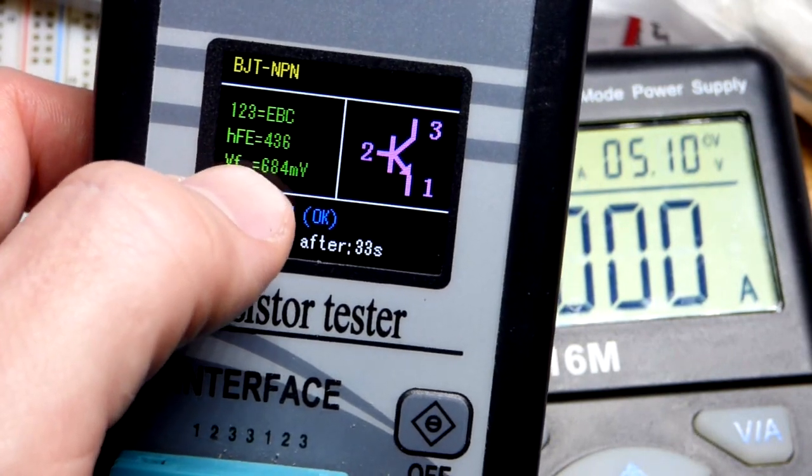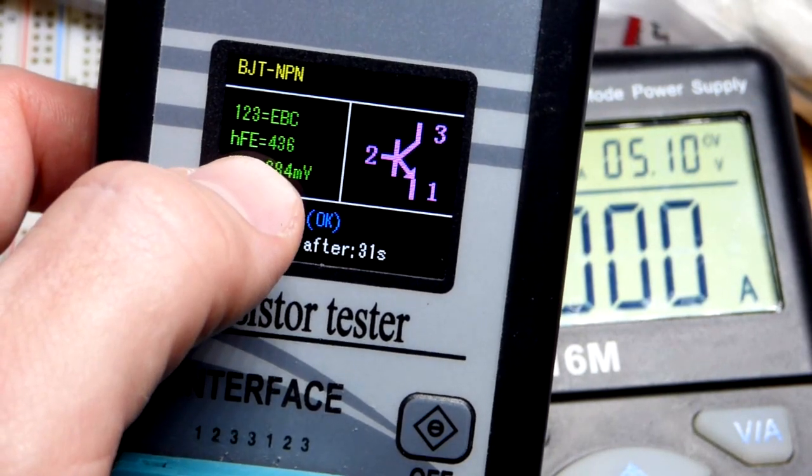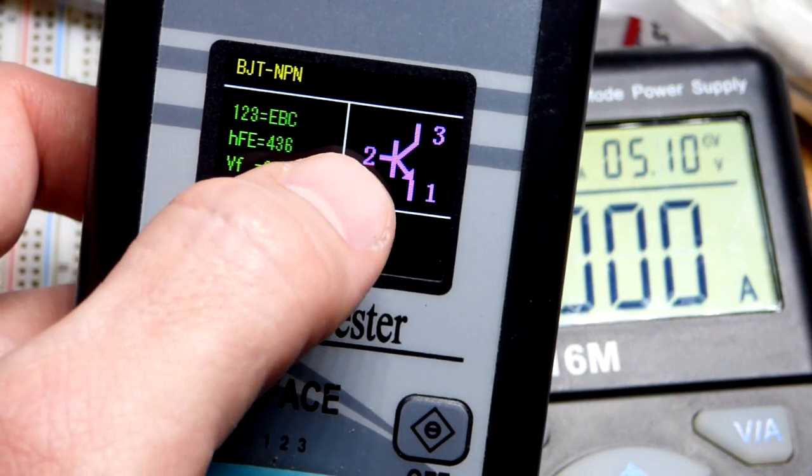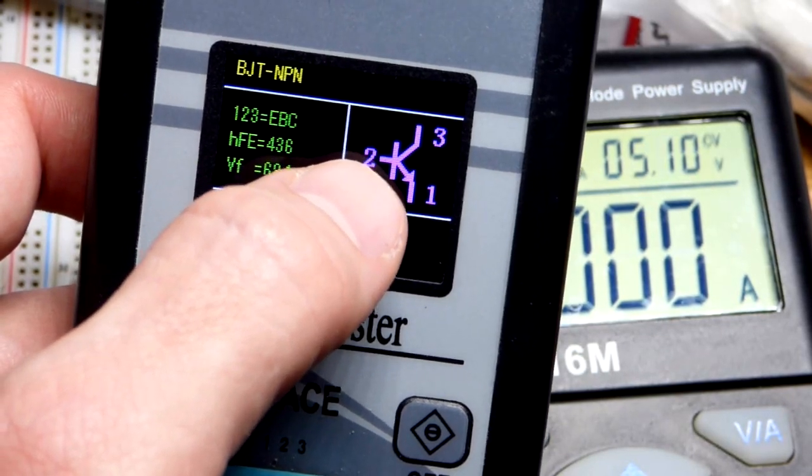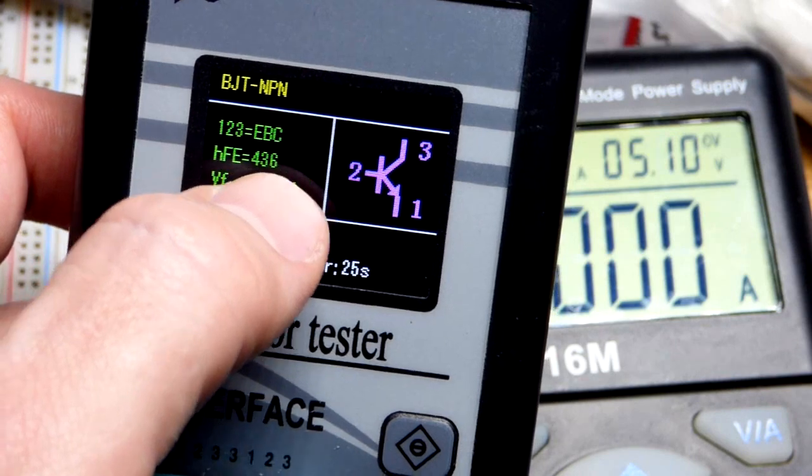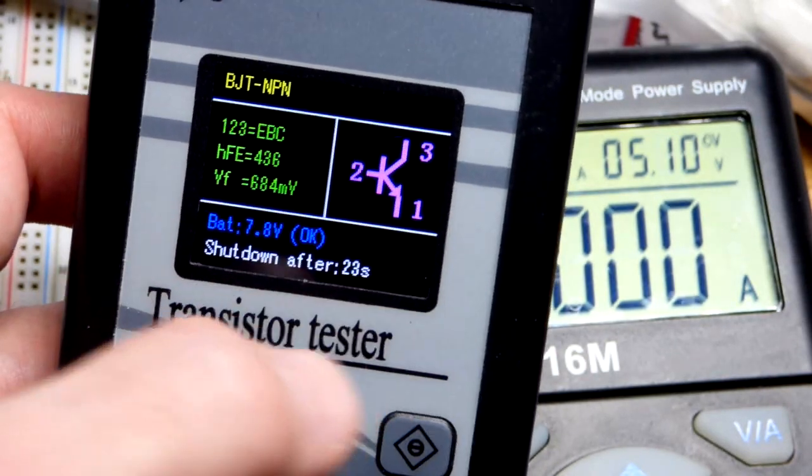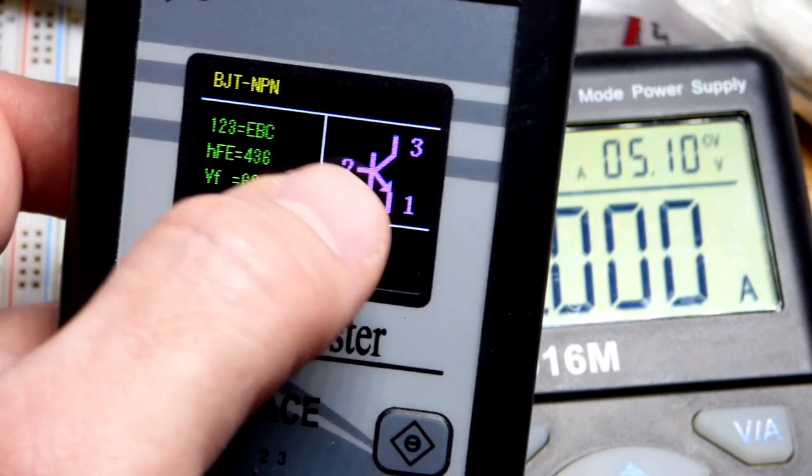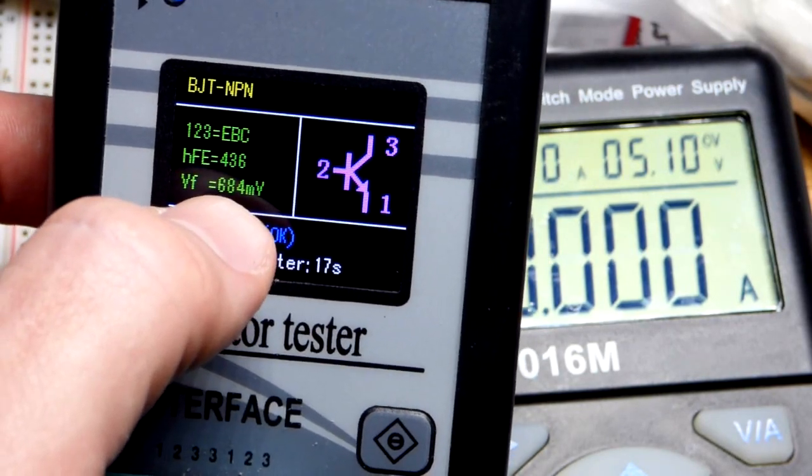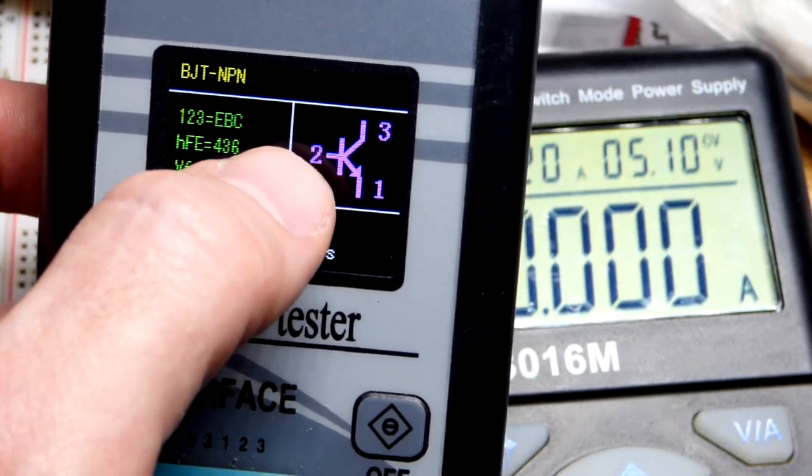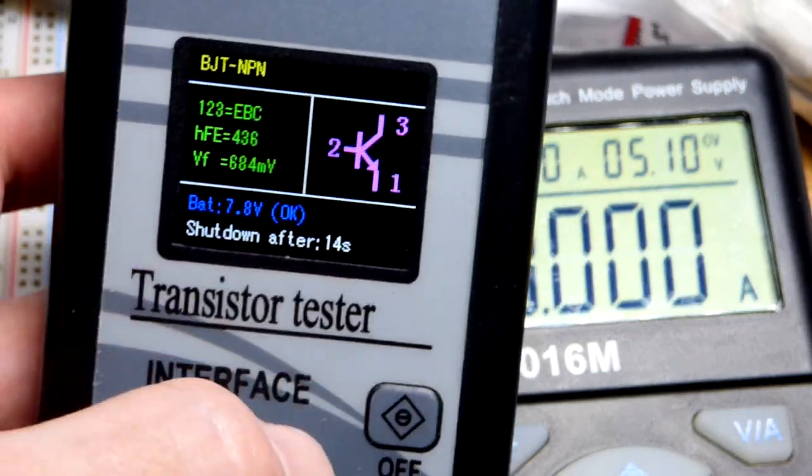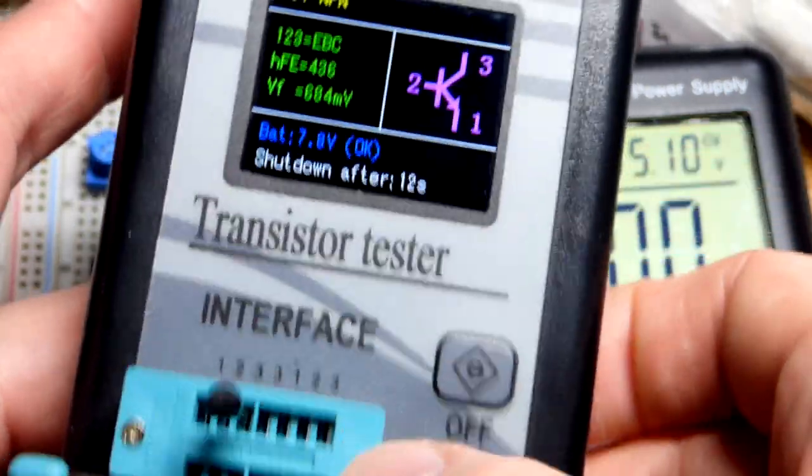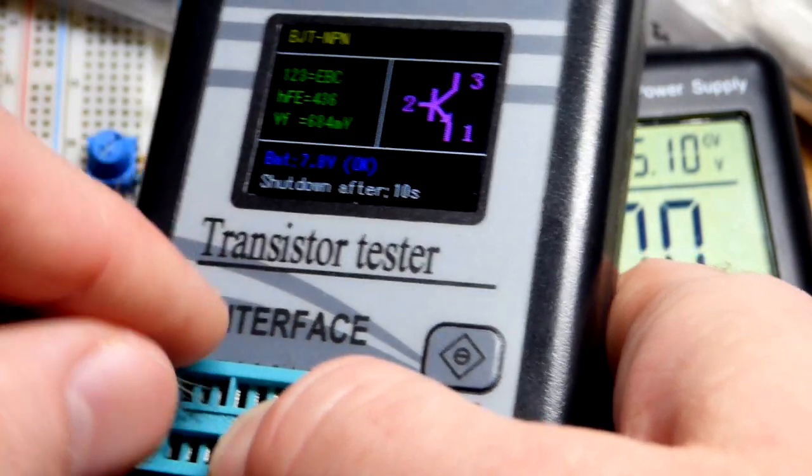Here's what we're really interested in, the gain HFE. For every milliamp of current from base to emitter, it's going to let probably about 400 milliamps of current from collector to emitter. It has a forward voltage, so it takes almost 0.7 volts to start conducting base to emitter so that you can conduct collector to emitter. Basic transistor stuff.